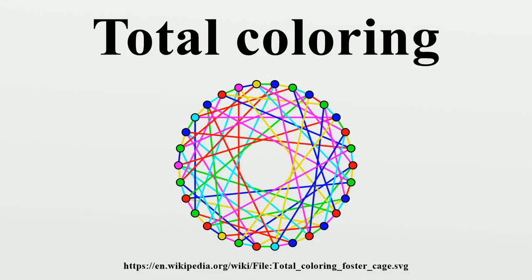In graph theory, total coloring is a type of graph coloring on the vertices and edges of a graph. When used without any qualification, a total coloring is always assumed to be proper in the sense that no adjacent edges and no edge on its end vertices are assigned the same color.